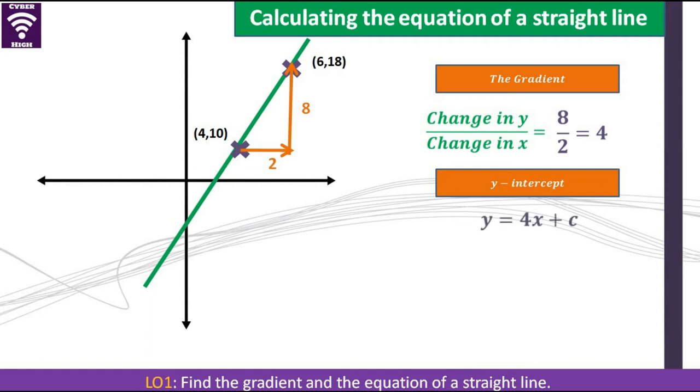Now we need to find out what is the value of c. Substituting any of those points, we are substituting 4, 10 into this expression. So we are now going to have 10 is equal to 4 times 4, which is 16, plus c gives us c is equal to negative 6. That is 10 minus 16. If we now have our c and we have our gradient, our final equation now is supposed to be y is equal to 4x minus 6.